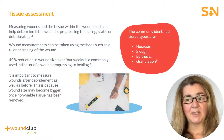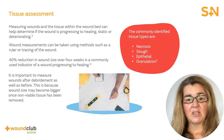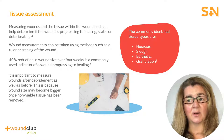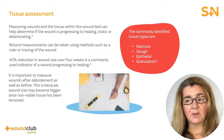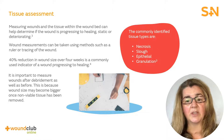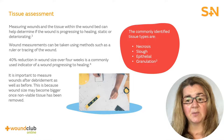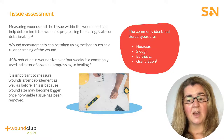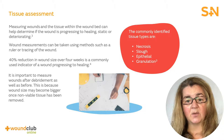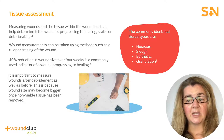During wound assessments, both the wound size and tissue types should be determined, as they give an indication of the wound status — for example, healing, static, or deteriorating. This enables the clinician to monitor the rate of healing and help predict which wounds are likely or unlikely to heal with conventional treatment. A 40% reduction in wound size over a four-week period can give a positive indication of the patient's progressive wound healing status.